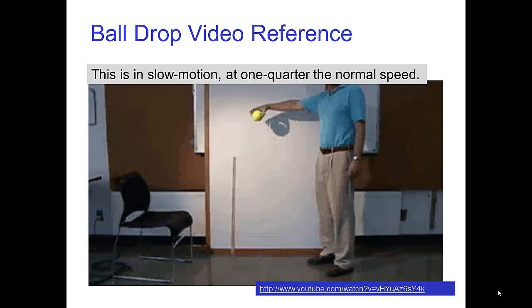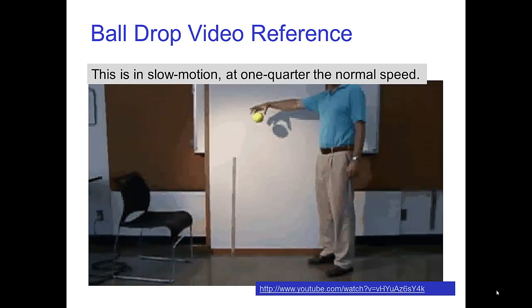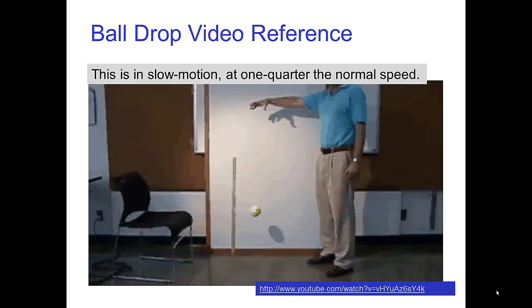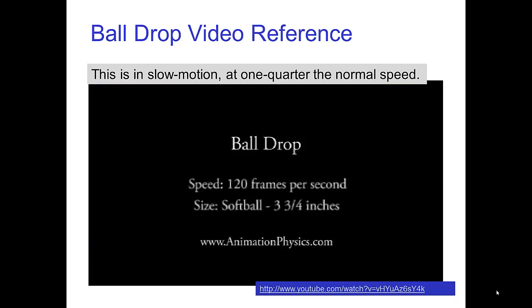Now let's look at some video reference for a ball drop. This was filmed in slow motion to allow us to easily see the motion. Clearly, this is not uniform motion since the ball is gaining speed as it falls.